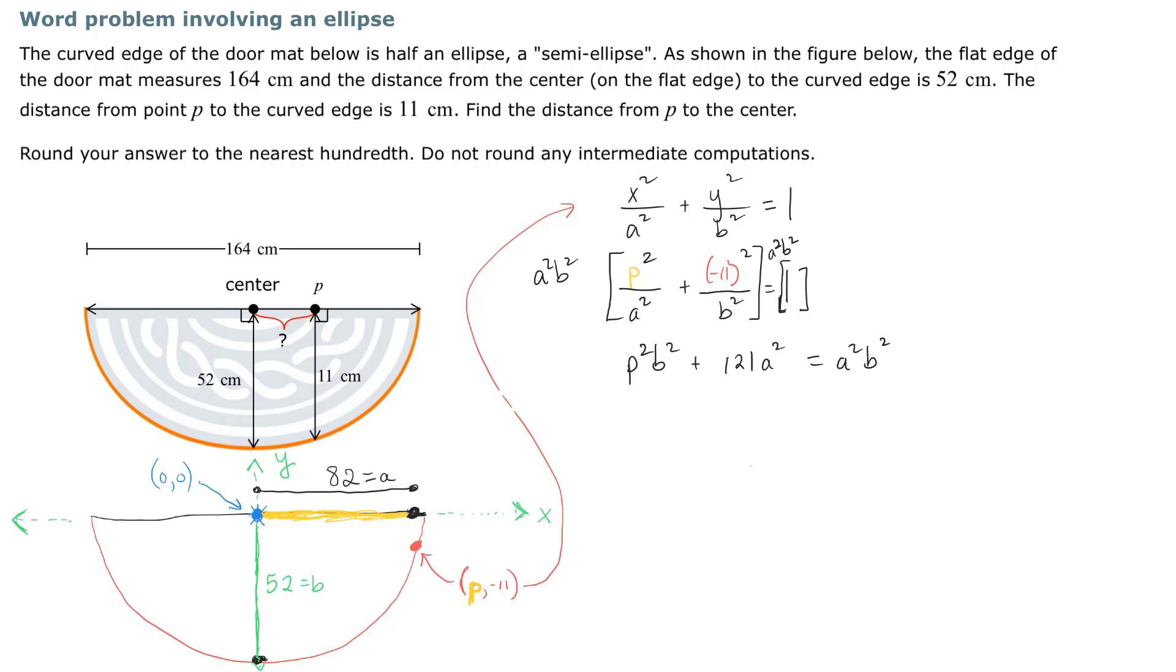Now we know b² is not zero. So now we have P² is equal to a² times the quantity b² minus 121, all over b².